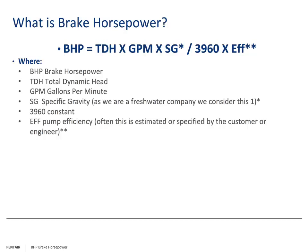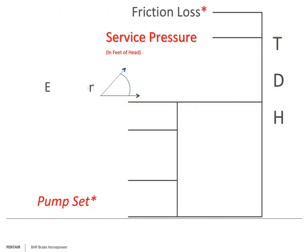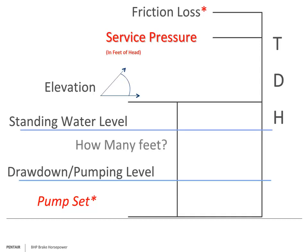Now we know what the formula is, let's put it to practical use. One question often asked is: what is total dynamic head? Looking at this simple diagram, it is friction losses throughout the system, pressure converted into feet of head, elevation, standing water level, and more importantly the drawdown. Adding all these factors will give us total dynamic head.